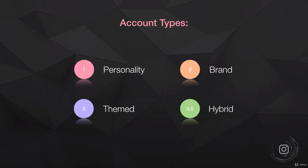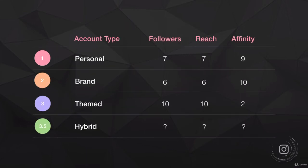Here are the three and a half account types rated across the key categories that determine an Instagram account's value. If you want to maximize followers, a themed account is strong — themed content around cats, holidays, or gaming is naturally viral and organic, giving you high followers and high reach. The problem is your affinity will be low, because followers of a themed account don't really know who they're following and have no personal relationship with the account.